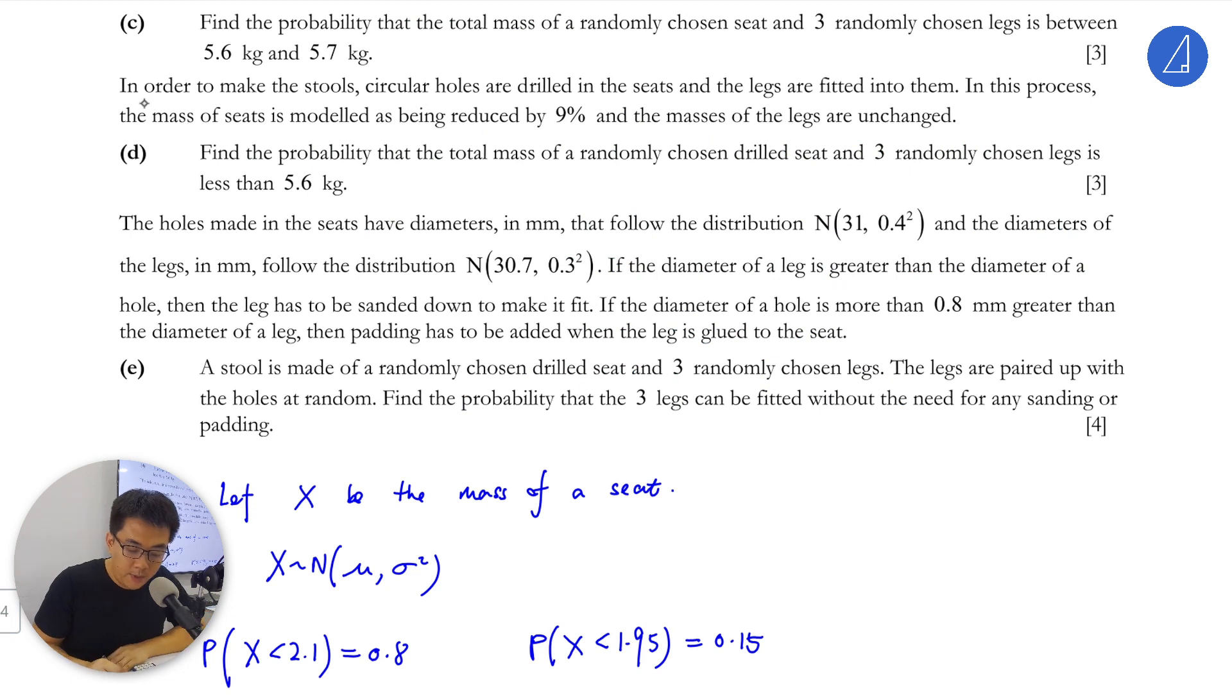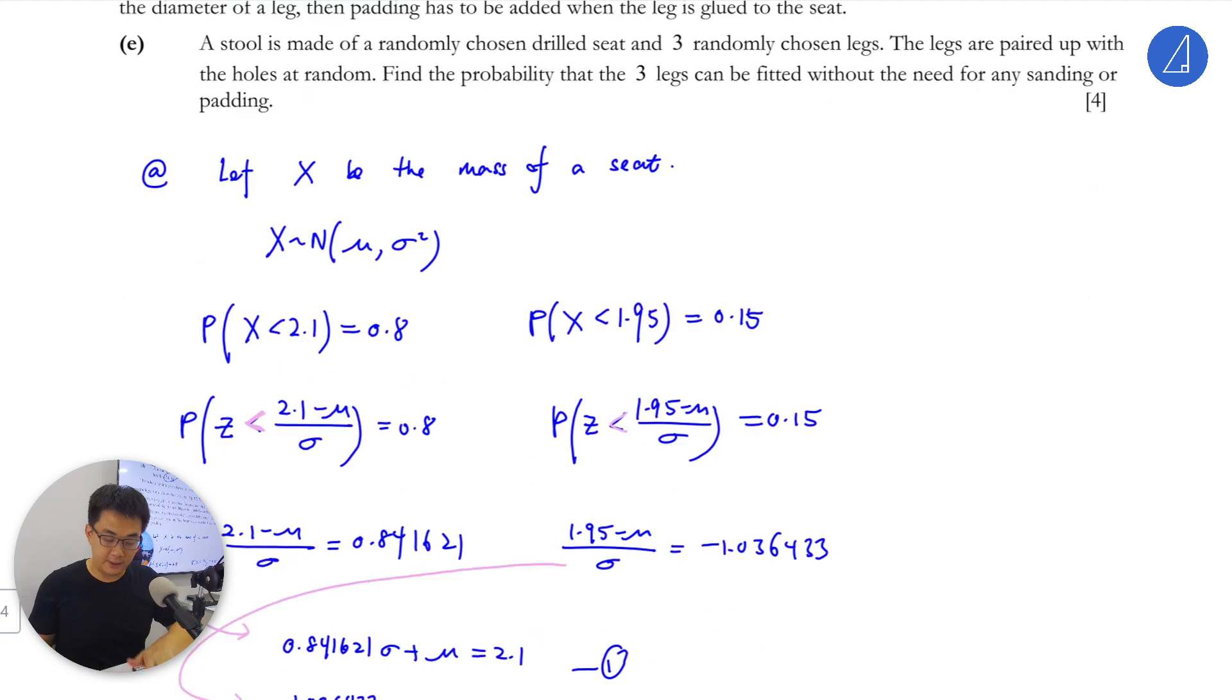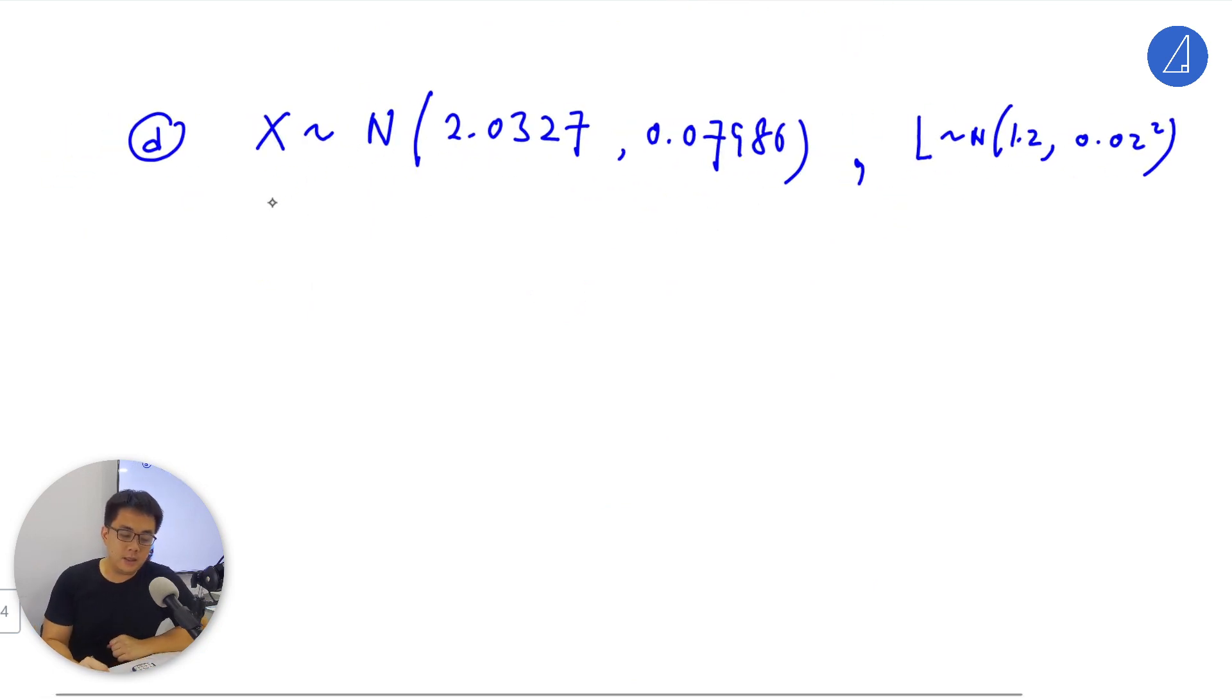Part D: In order to make the stool, circular holes are drilled in the seats and the legs are fitted into them. In this process, the mass of a seed is modeled by being reduced by 9%, and the masses of legs are unchanged. Find the probability that the total mass of a randomly chosen drilled seed and three randomly chosen legs is less than 5.6 kg. The drilled seed D is actually 0.91 times X, because it's 9% less.